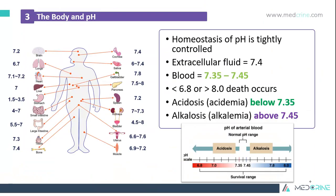In the human body, homeostasis of pH is tightly controlled. Extracellular fluid has a pH of 7.4, and blood has a pH range of 7.35 to 7.45. Whenever there is a pH of less than 6.8 or greater than 8.0, death is imminent. When we have a blood pH below 7.35, it is known as acidosis, and alkalosis is when we have a pH above 7.45 in blood.